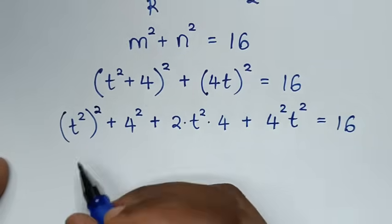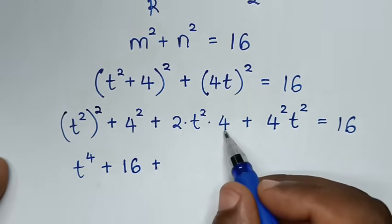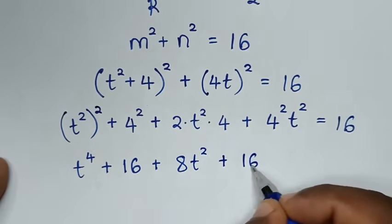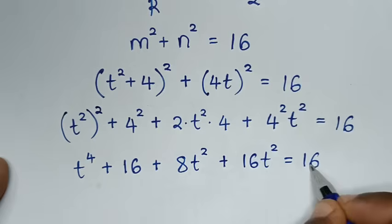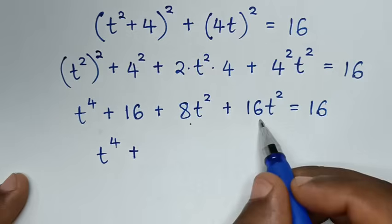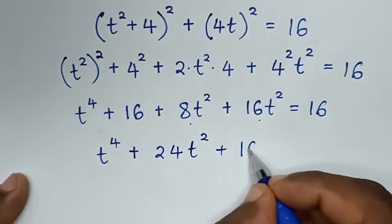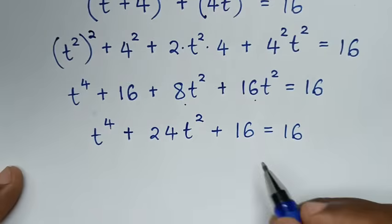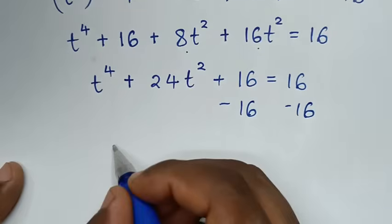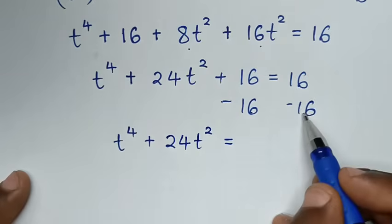So the equation becomes t⁴ + 16 + 8t² + 16t² = 16, which simplifies to t⁴ + 24t² + 16 = 16. Subtracting 16 from both sides gives t⁴ + 24t² = 0.